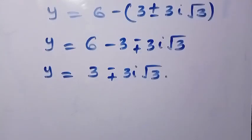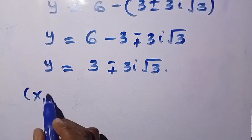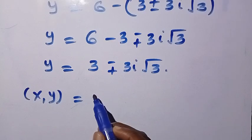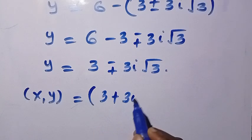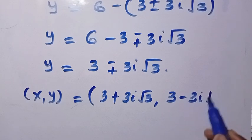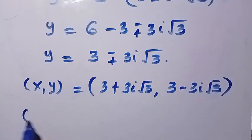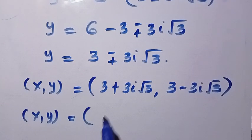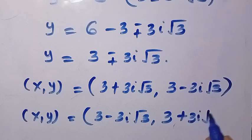Writing the solutions as coordinate pairs: when x equals 3 plus 3i√3, y equals 3 minus 3i√3; and when x equals 3 minus 3i√3, y equals 3 plus 3i√3. These are our two solution pairs.